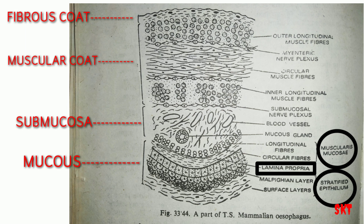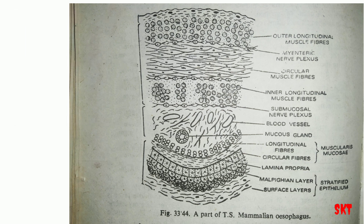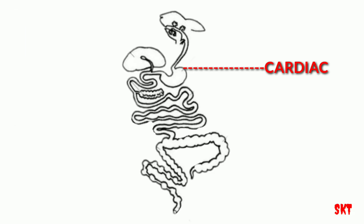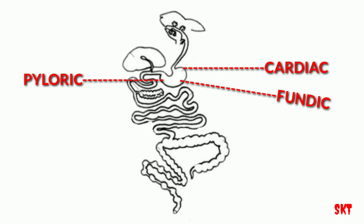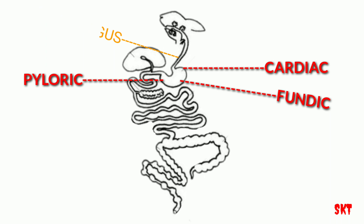Food then enters the stomach, which has three parts: the cardiac, fundic and pyloric. The cardiac is the broad left part, into which the esophagus opens through the cardiac aperture, guarded by the cardiac sphincter which controls reverse flow of food. The fundic part is the middle or main region of the stomach. The pyloric part connects the stomach to the small intestine, guarded by the pyloric sphincter.